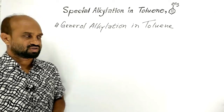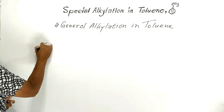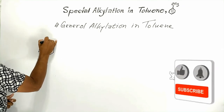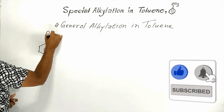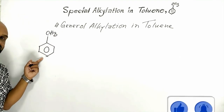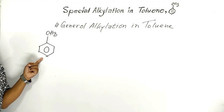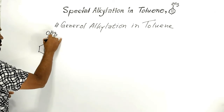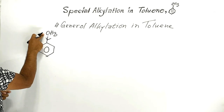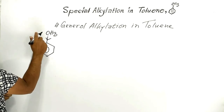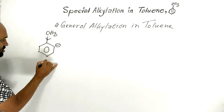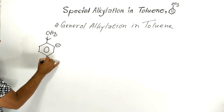Let's begin with general alkylation in toluene. This is toluene, or methyl benzene. The methyl group is a kind of electron-donating group — it increases electron density at the ortho position and at the para position.